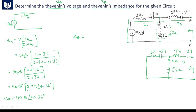Zth is Z3 in series with the parallel combination of Z1 and Z2. So we can write it as Z1 times Z2 divided by Z1 plus Z2.